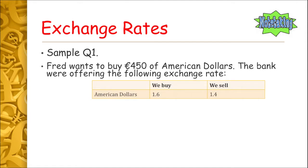The 'we sell' rate applies if you have euros and want to buy dollars — the bank will sell American dollars at a rate of 1.40 per euro. The key thing is this is always per one euro and is always from the perspective of the bank. The bank buys dollars at 1.60 per euro and sells dollars at 1.40 per euro.